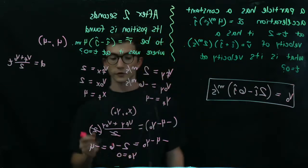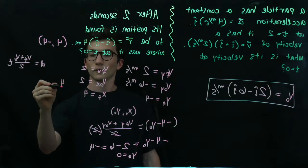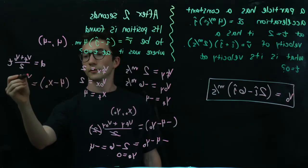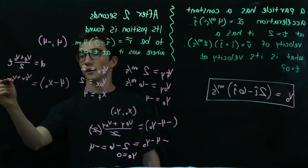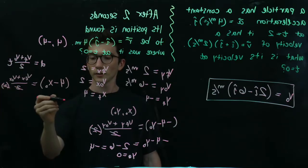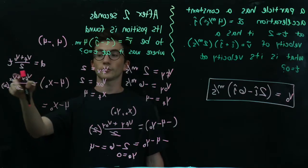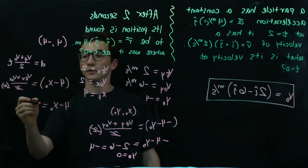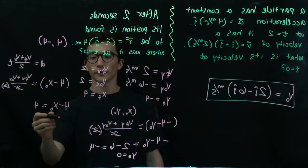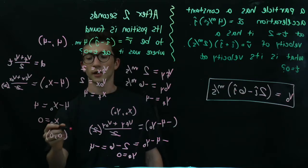Let's do the same thing for the x component. The final x position minus the initial equals v final x plus v naught x over 2, times 2. Canceling the 2s, we get 4 minus x naught. Substituting in the numbers gives us 2 plus 2, or 4. If 4 minus x naught equals 4, then x naught had to be 0. So the particle started at the origin, 0, 0.